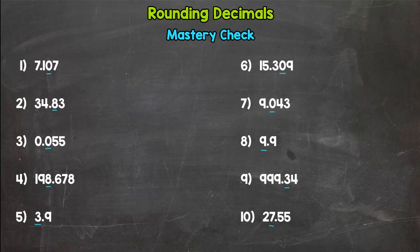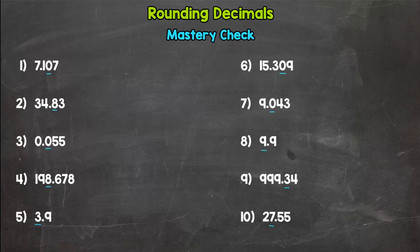Okay, so if you're confident to start your mastery check, when I say pause you should have a piece of paper and a pencil or something to write these ten down with. When I say pause, you will round these ten decimals to the underlined place. When you have all ten done, go ahead and press play. I'll go through the answers and you see how you do.